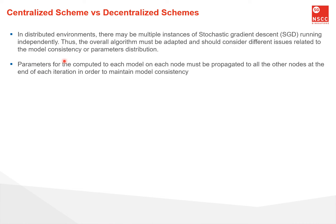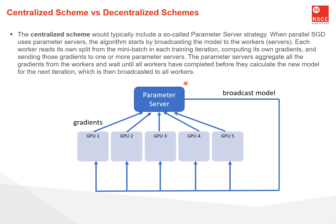The weights or parameters computed for each layer on each node must be propagated to the other nodes so they know the difference between their own local copy and the parameters on other nodes. This is done to maintain model consistency. We'll talk about two schemes: a centralized scheme versus a decentralized scheme. In the centralized scheme, we have a parameter server that acts like a general to control all the workers.